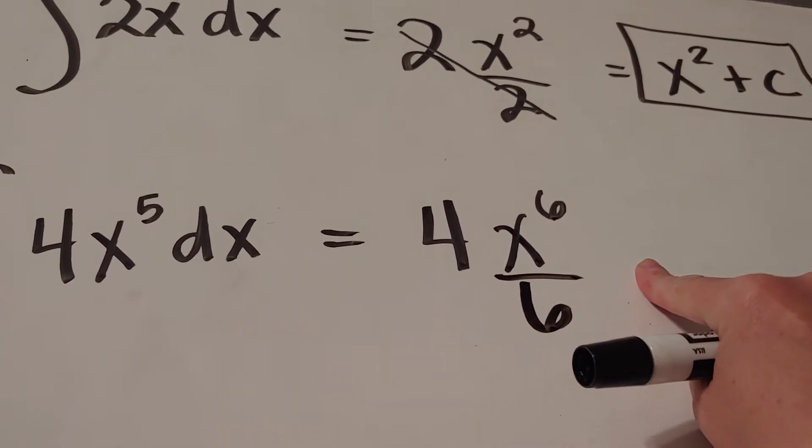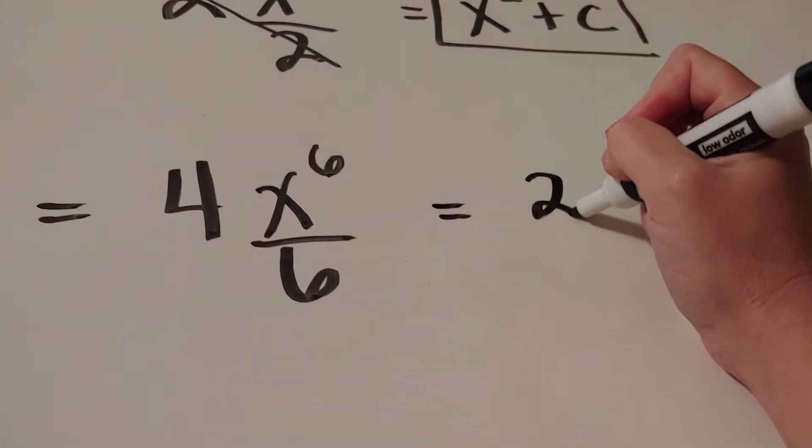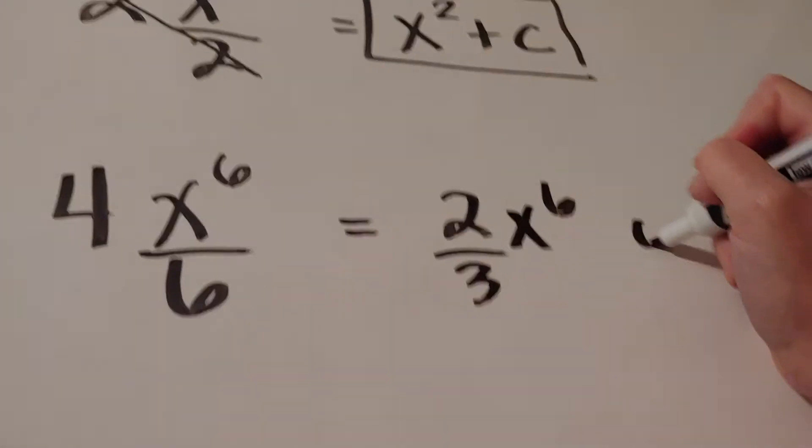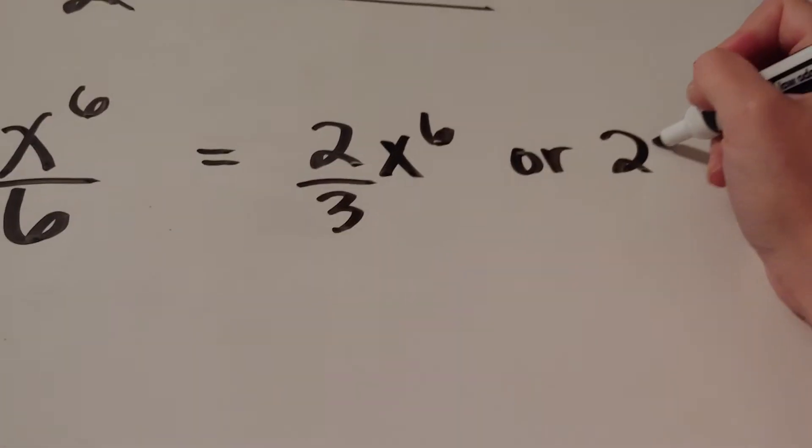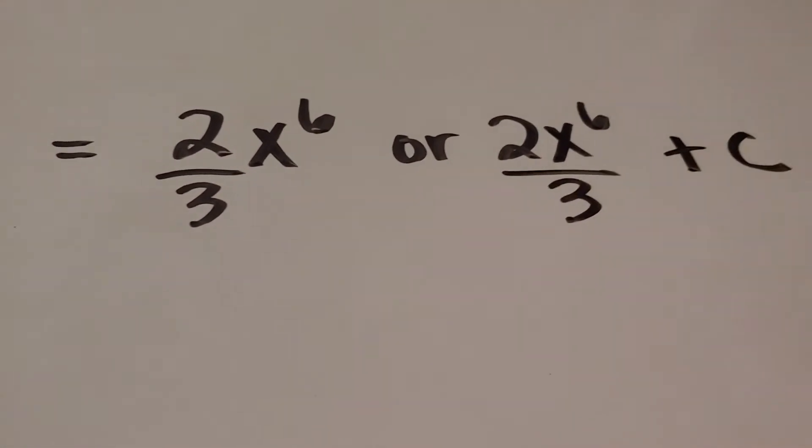Okay, again, I'm not going to put plus c yet, because I'm going to reduce the 4 and the 6. And the 4 and the 6 will reduce to a 2. Now you could either write it 2 thirds x to the sixth, or some students like writing it 2x to the sixth over 3. Both of those work. And then of course our plus c.